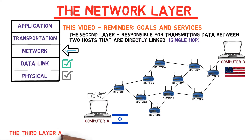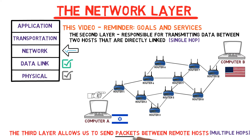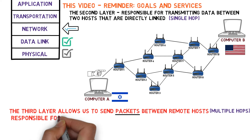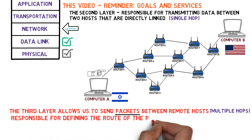The third layer allows us to send packets between remote hosts, that is, hosts that are not directly linked, but are rather connected via multiple hops. Datagrams in this layer are called packets. The third layer is responsible for defining the route of the packets — in other words, deciding upon the path that the packets will travel.